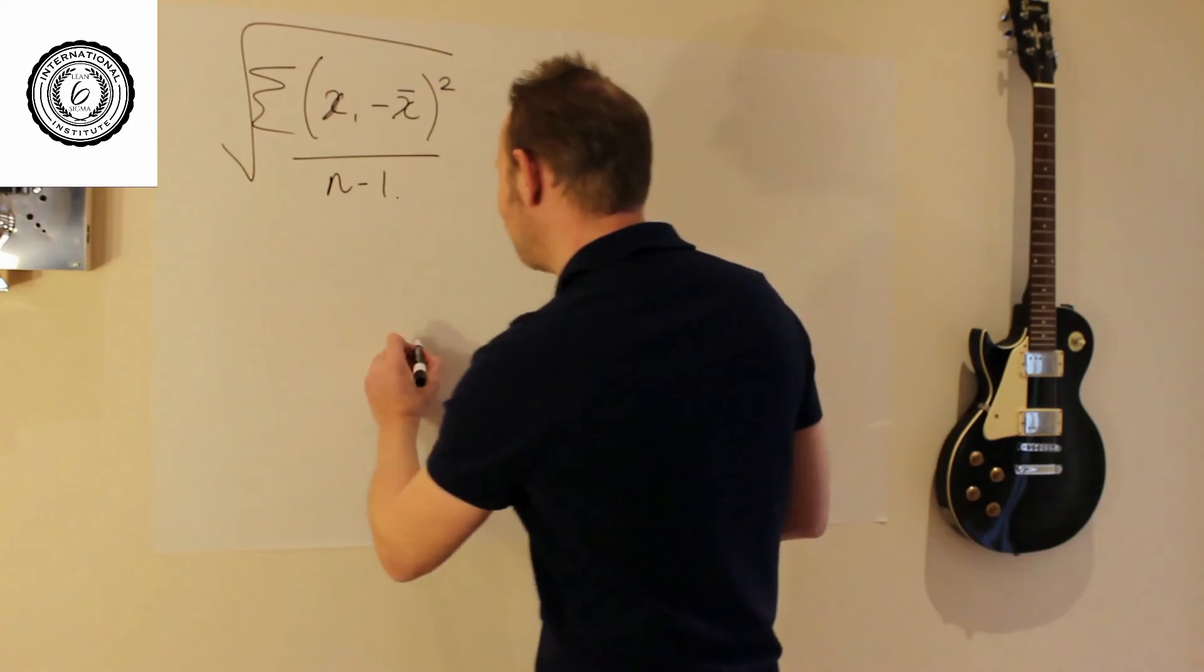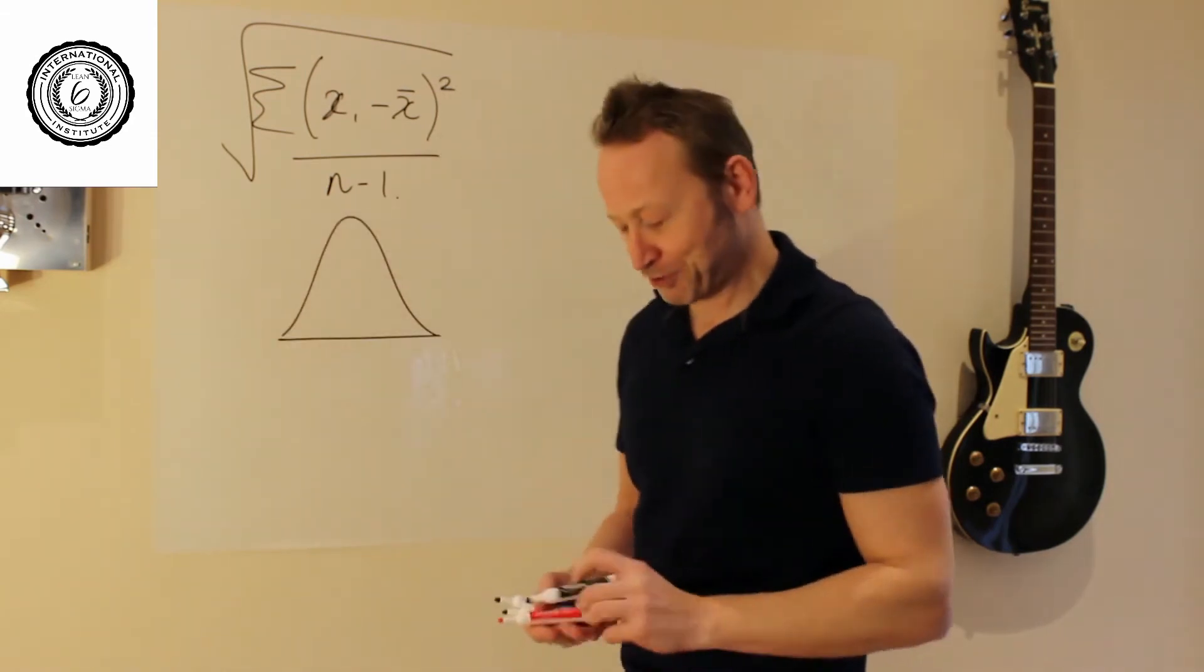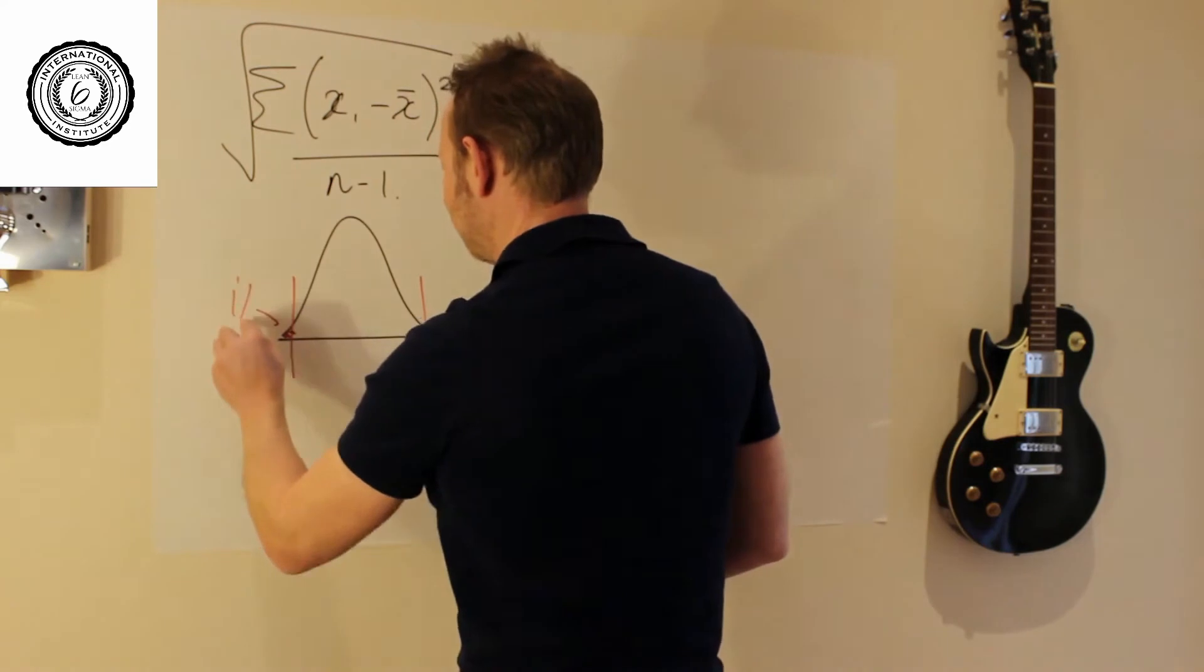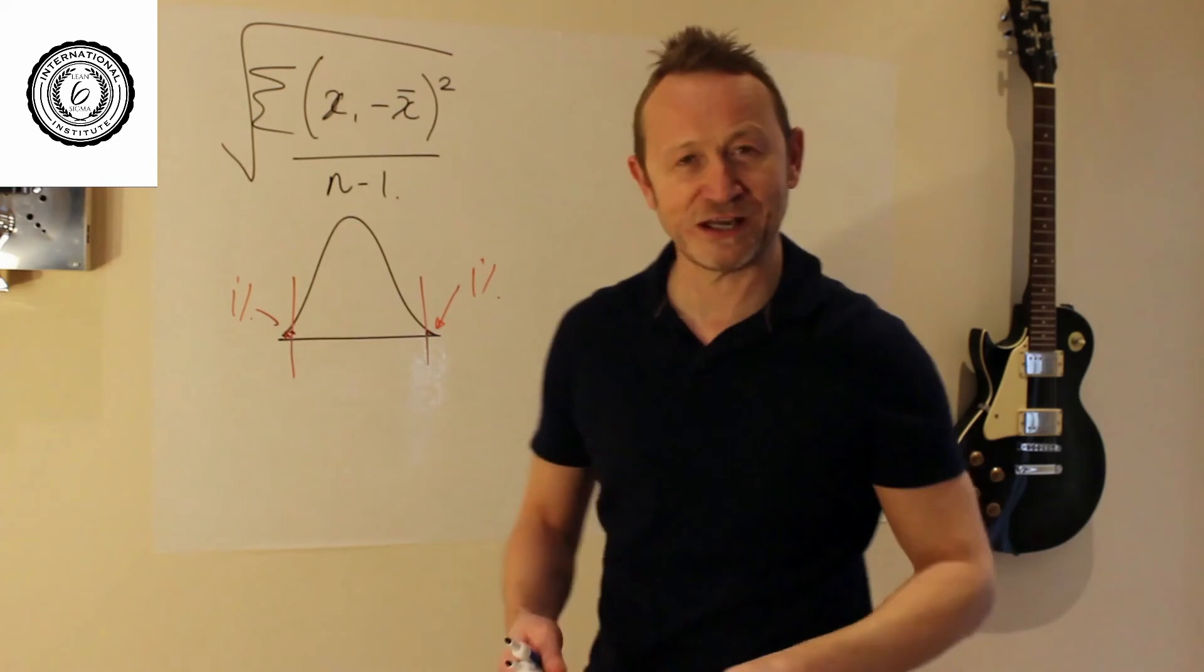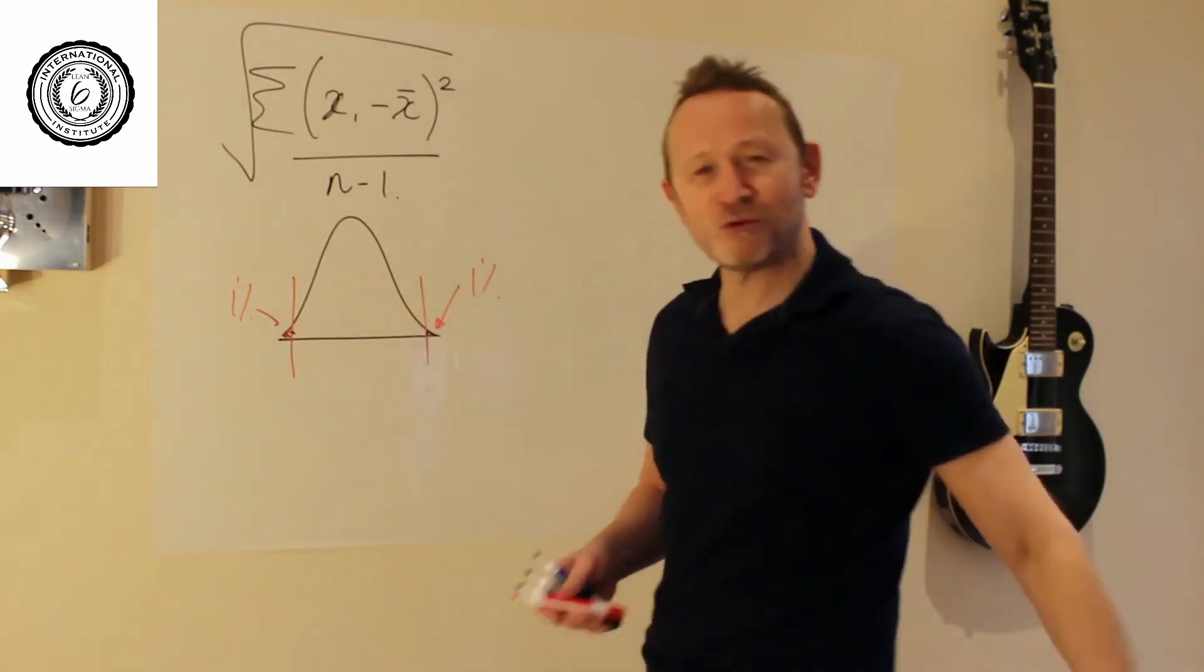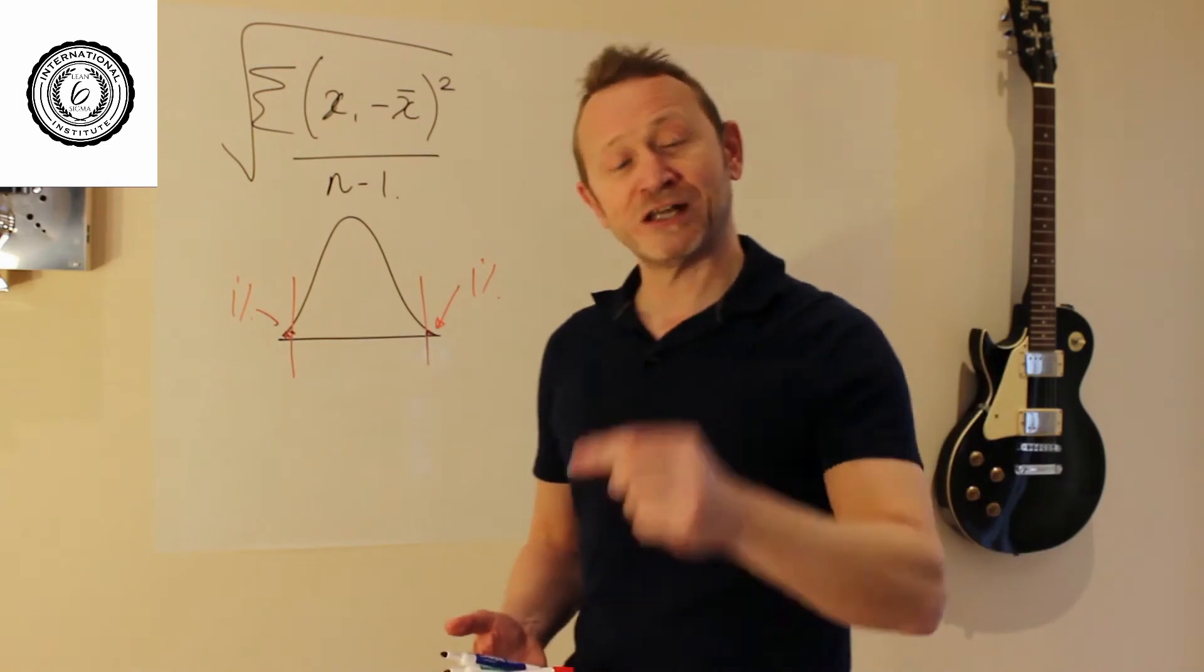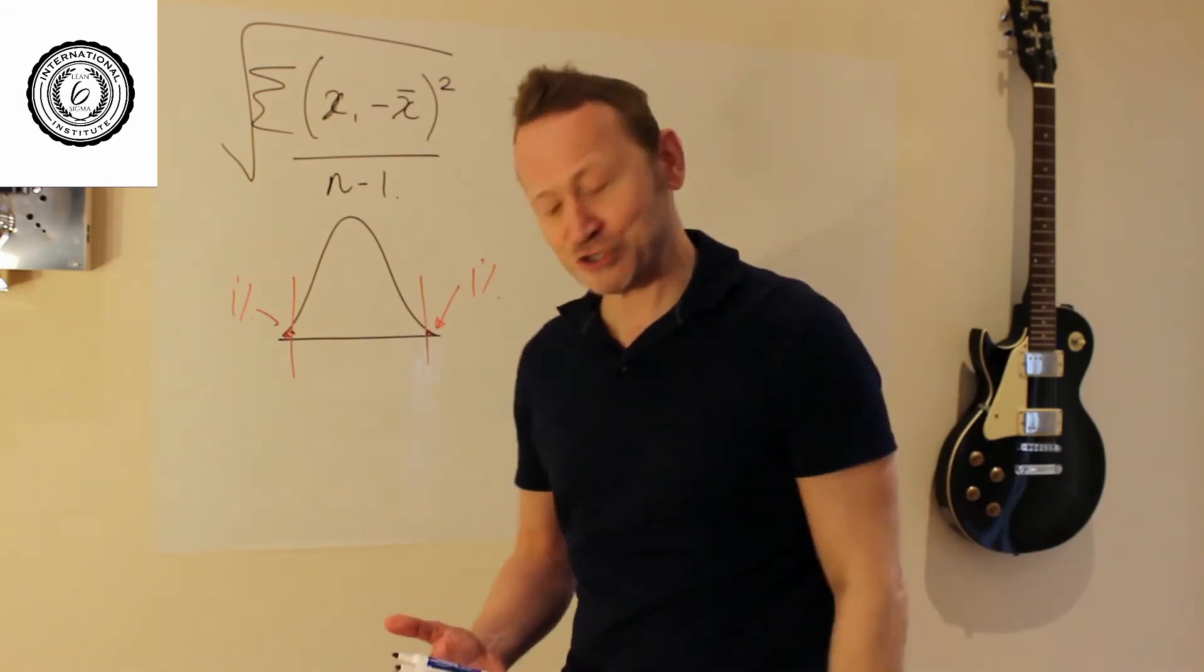Your processes are going to generate a distribution. Maybe the distribution looks like this. Maybe there's a 1% defect rate going to appear perhaps in the tails. Now of course what you want to know is that that's going to happen. So you're going to take data out of your process and you're going to calculate basically two statistics in order to be able to understand that picture.